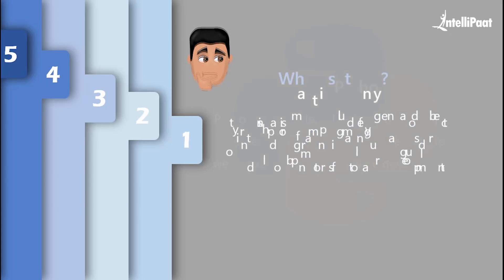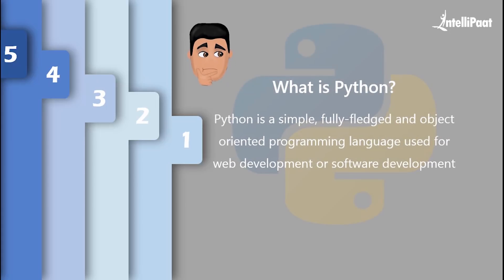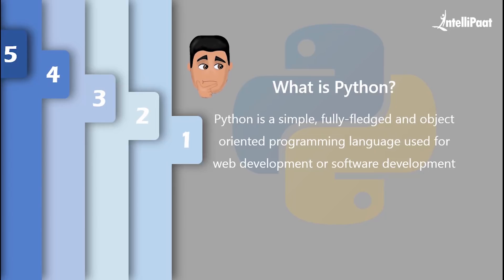Python, on the other hand, is a fully fledged object-oriented and high-level programming language made by programmers and developers for general purpose programming. Python is widely used in GUI-based applications such as games, graphic designs, web applications, and many more. So we can say that R's functionality is developed with a statistician's mindset, giving it field-specific advantages, while Python is praised for being a general purpose language with an easy-to-understand syntax.